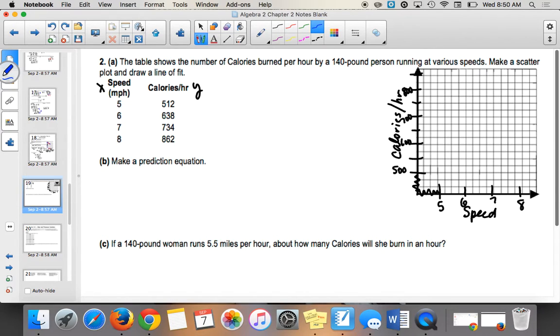So if I have 5, 512, so we'll say right in there, we have 6, 638. We have 7, 734. And we have 8, 862. It looks pretty good. It looks like almost like a line.